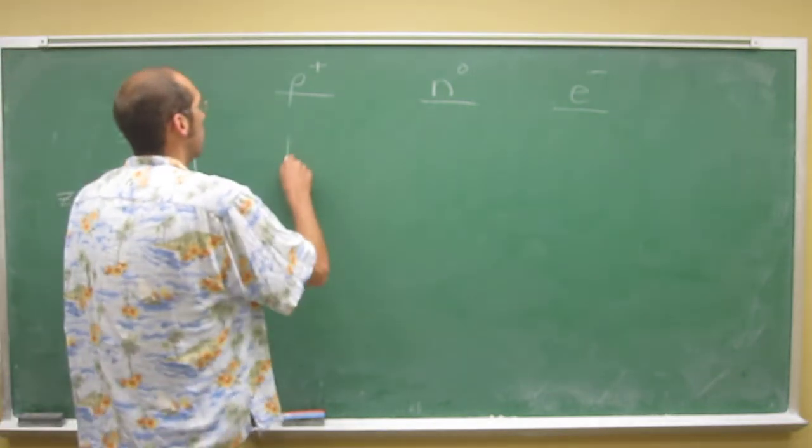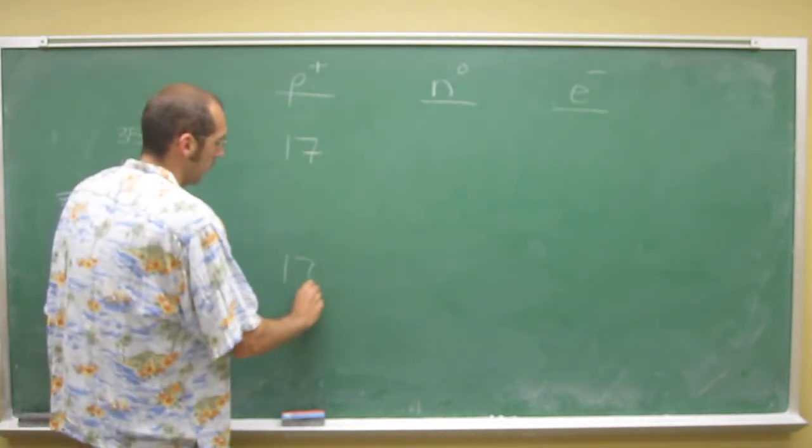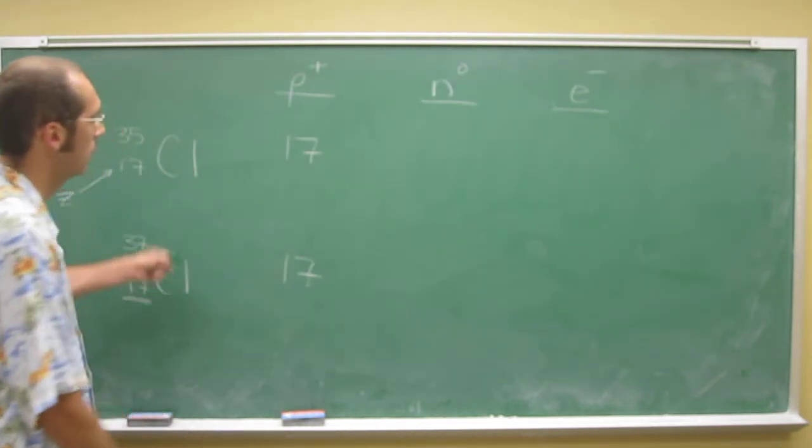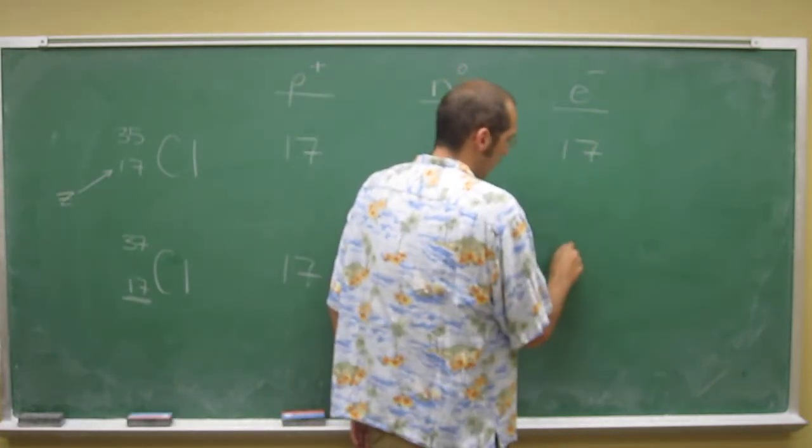In chlorine, to be a chlorine atom, you have to have 17 protons. And to be a neutral chlorine atom, that means you have to have 17 electrons.